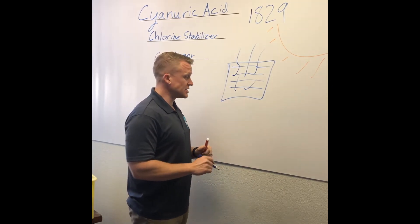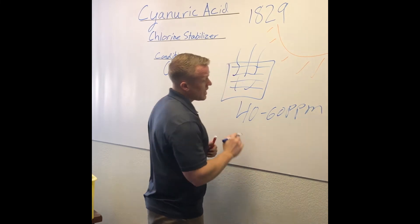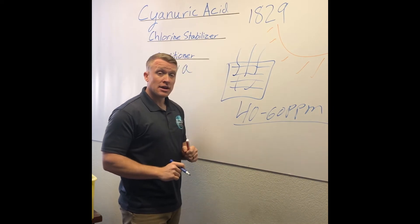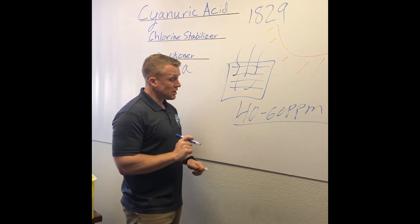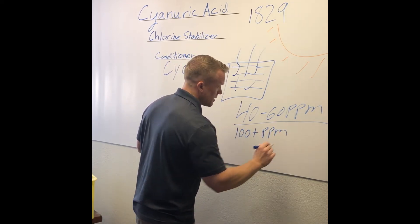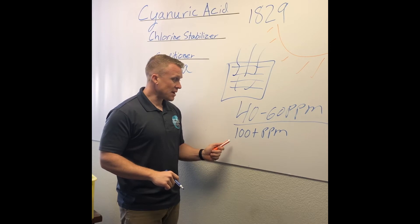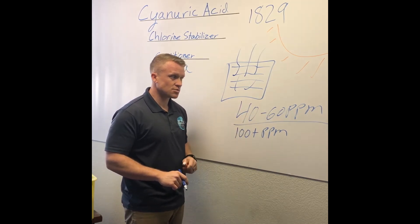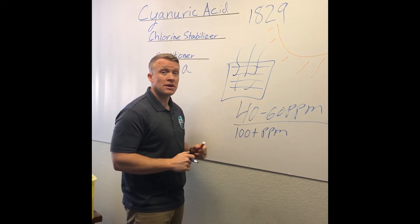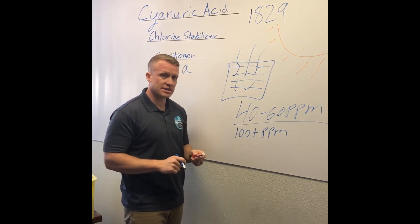The range we want to keep cyanuric acid at is 40 to 60 parts per million — that's ideal. But in Arizona, our pools on average are probably at 100 plus parts per million. You might ask: why is it so high? How does that happen if you want to be around 40 to 60? Are you adding too much when you start a pool? Because this is something we add to your pool when you put fresh water into it.